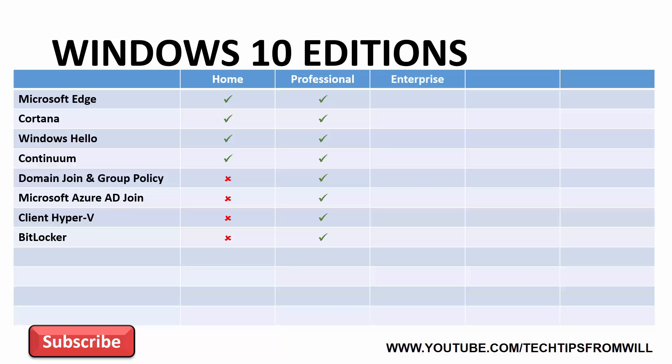The next Windows 10 edition is Windows 10 Enterprise. Windows 10 Enterprise is aimed at larger organizations that require all the functionality that Windows has to offer, and is the top edition with the most features. The first feature is support for Direct Access. Direct Access is a VPN-like feature that allows the user to access the corporate network remotely when they're not in the office. What makes Direct Access different to a traditional VPN is that it connects the user to the corporate network automatically when the user has an internet connection, seamlessly giving the user access to the resources they need to do their job.